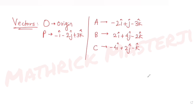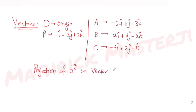We have been told, given these three position vectors respectively, to find the projection of vector OP on a vector which is perpendicular to vectors AB and AC.